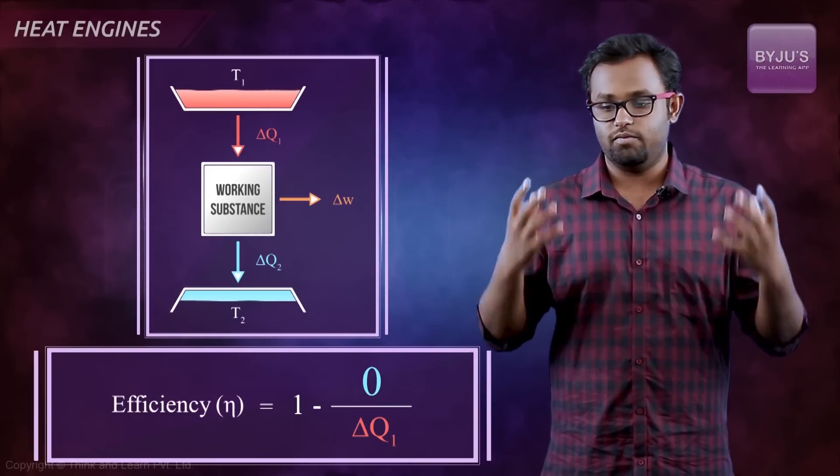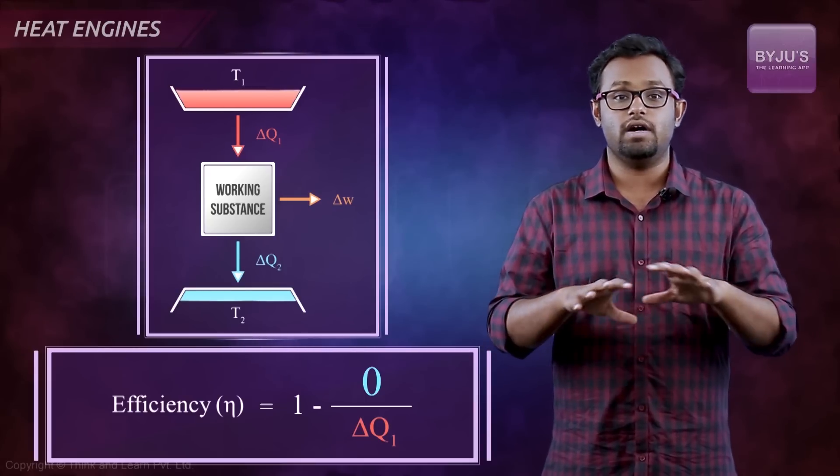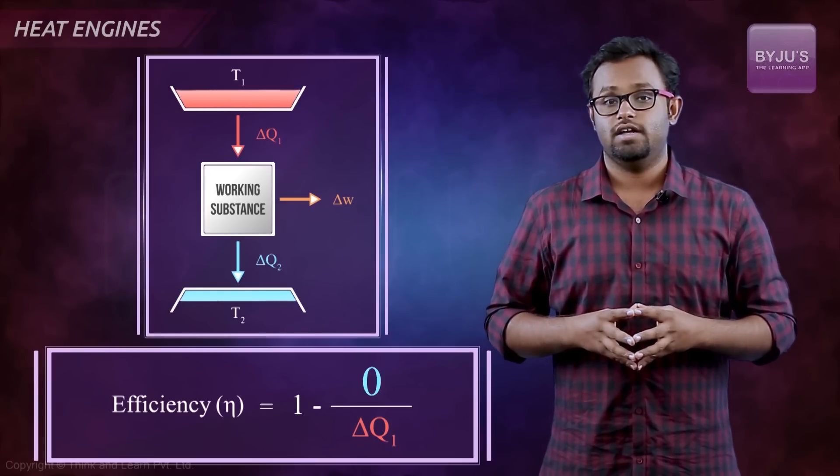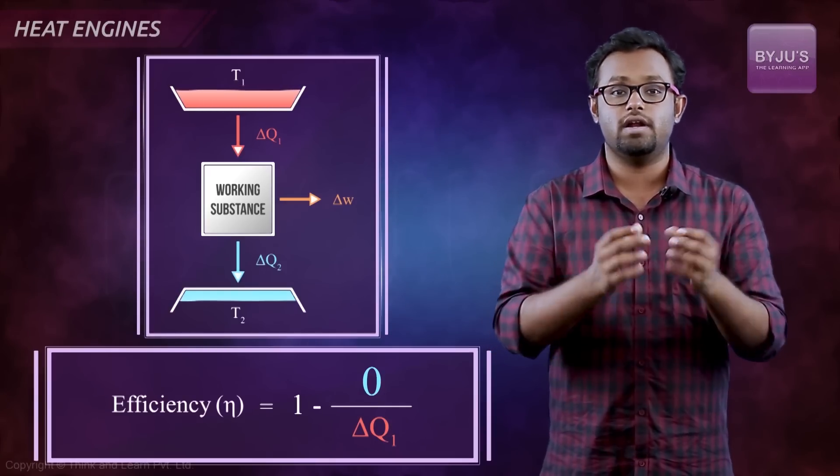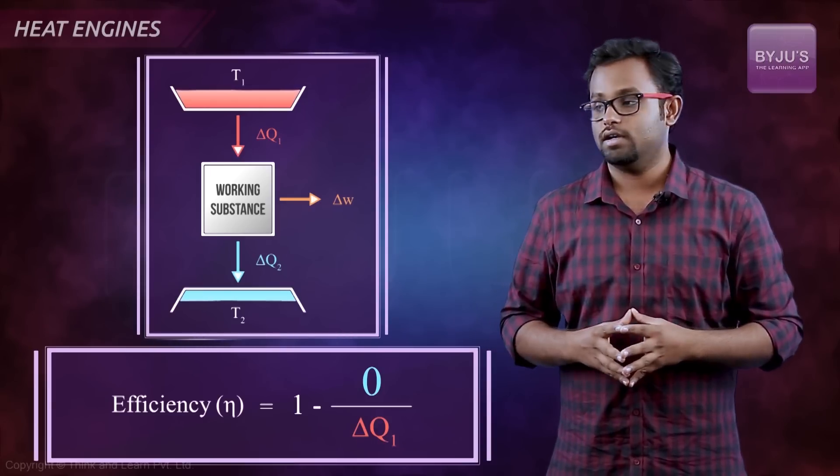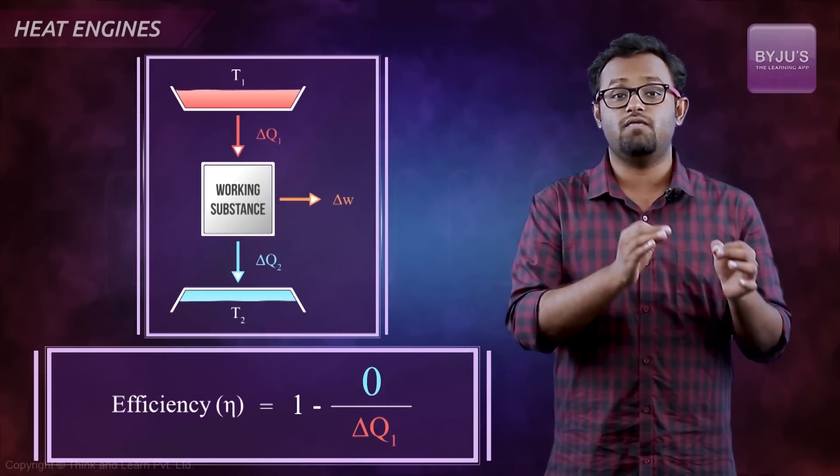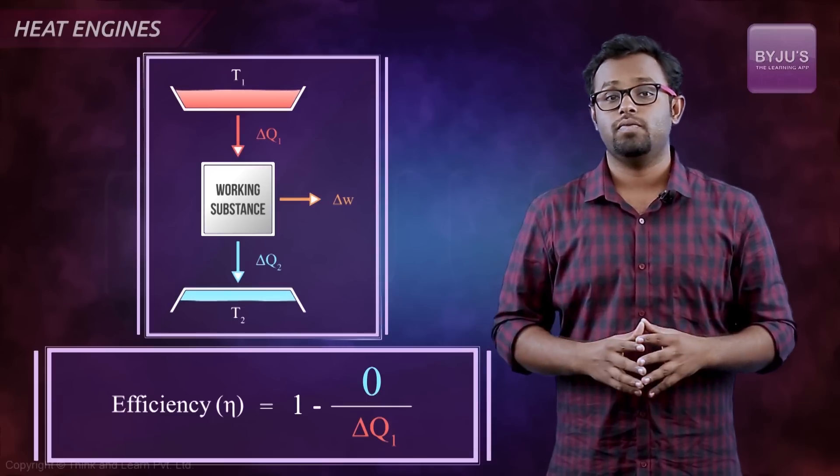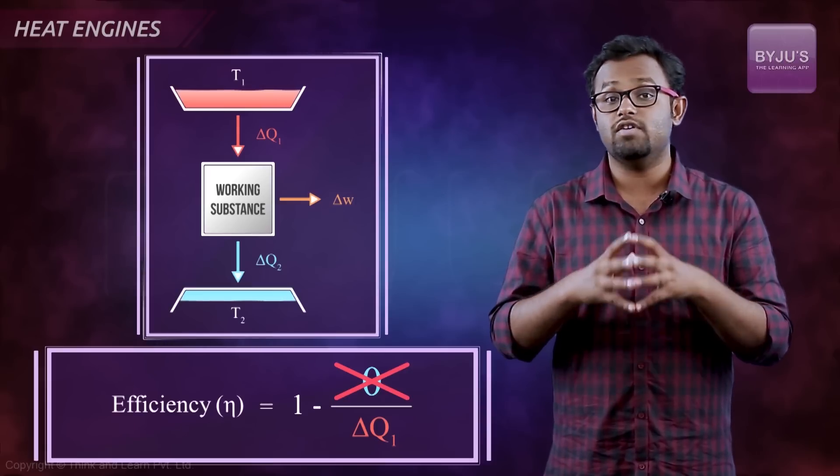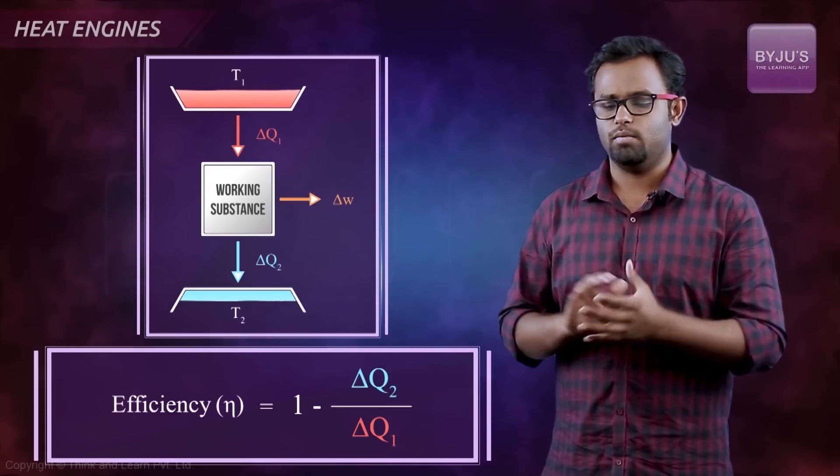I started wondering that if you could design such a machine, then you would have solved a big part of the energy crisis that we are facing. The amount of fuel which we put in our bikes would completely give us the mileage. But it turns out that in nature, there's another fundamental independent law that doesn't allow that. It says that delta Q2 can never be zero.